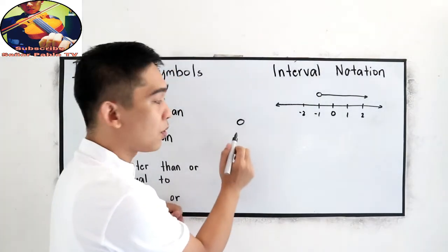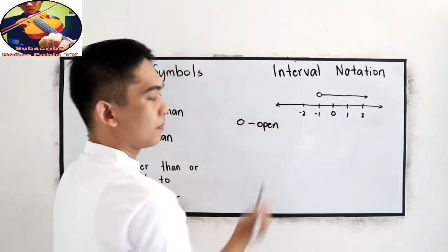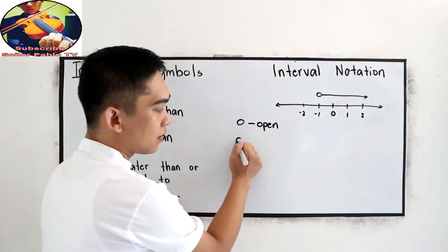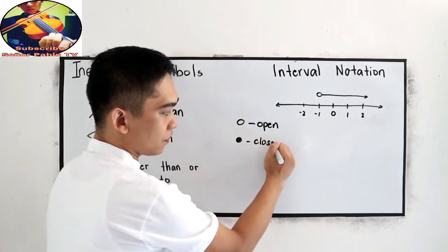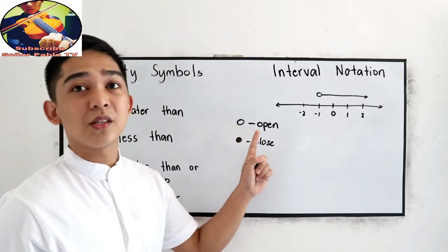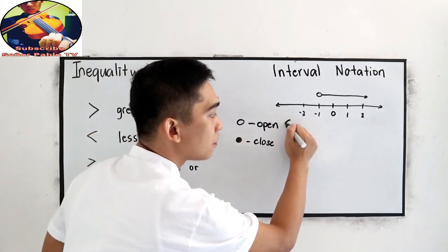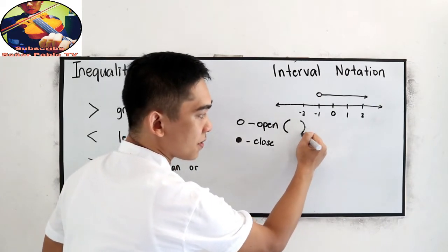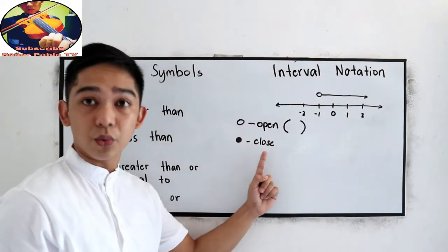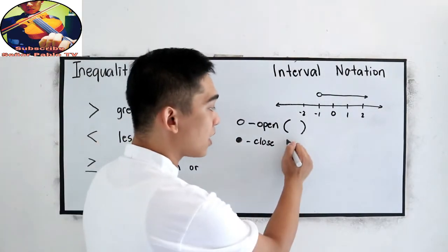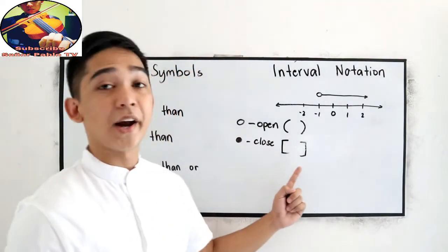If you encounter this symbol, this is what we call the open. And the shaded part is what we call the closed. If you encounter the open symbol, we will use the open parentheses or closed parentheses. And if our symbol is closed or shaded, we're going to use the bracket sign.